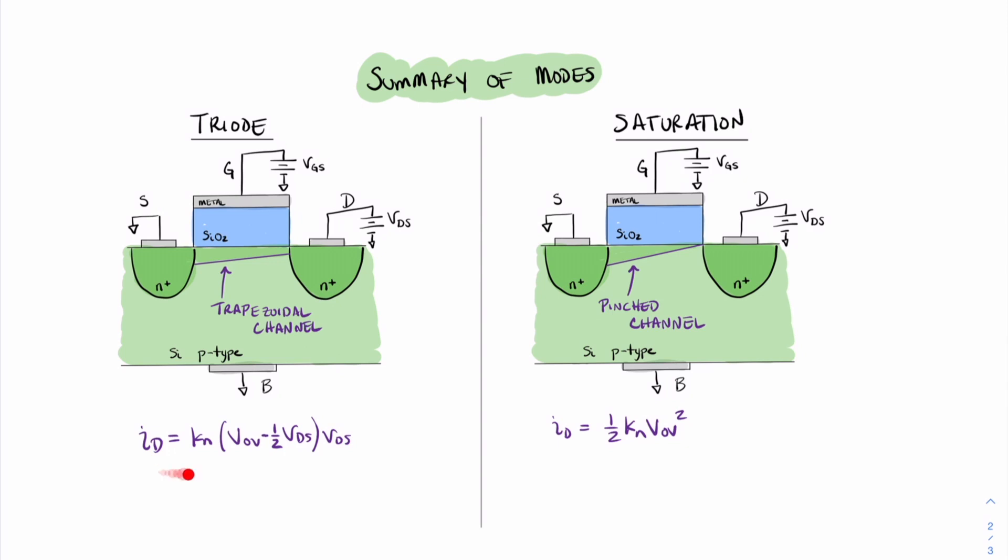And these two equations are the current equations for the MOSFET. All we have to do now is determine which mode a circuit is in to be able to know which equation to use. And that concludes this video of Unwired Learning.